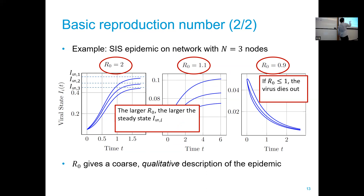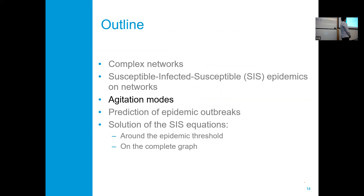R₀ gives a coarse, qualitative description of the epidemic. If R₀ = 2, it somewhat blurs the picture of how the steady state is distributed across different nodes.